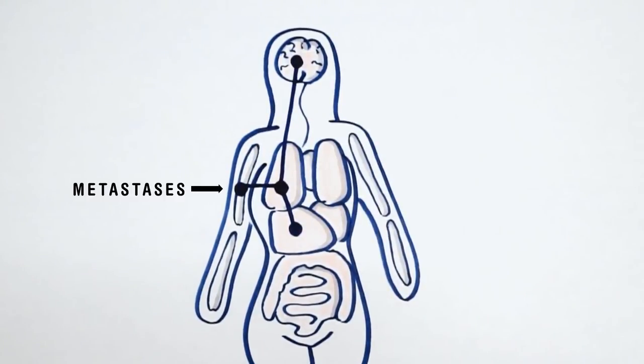To review, cancer cells grow first in the organ they started in and learn ways to invade and spread to other places.